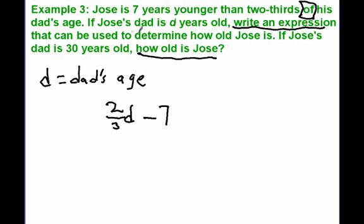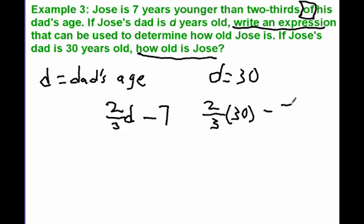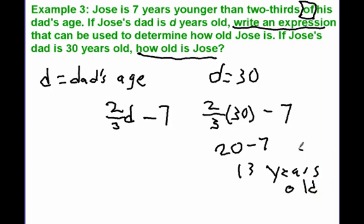That answers our first question. The second question says if Jose's dad is 30 years old, how old is Jose? This tells us D equals 30. We plug that into the expression: two-thirds times 30 minus 7. Two-thirds times 30 — two times 30 is 60, divided by three gives 20. Then take away seven to find that Jose is 13 years old. We used this expression to model our problem.